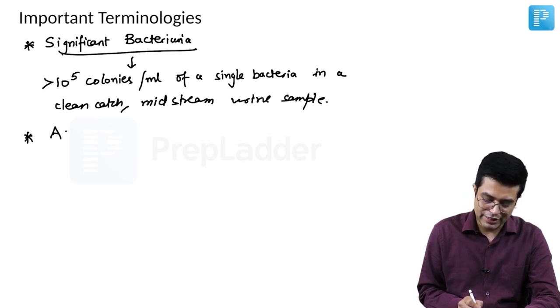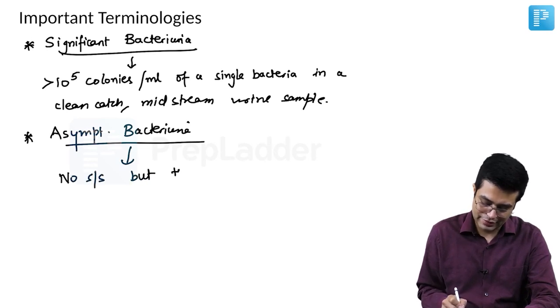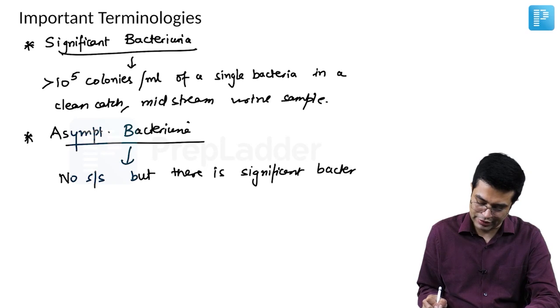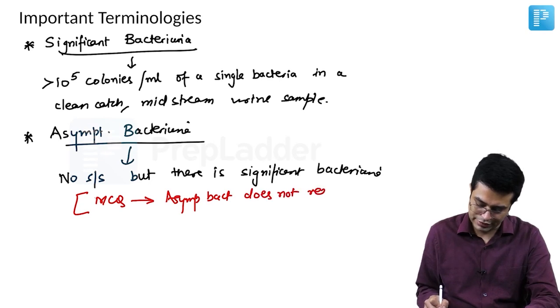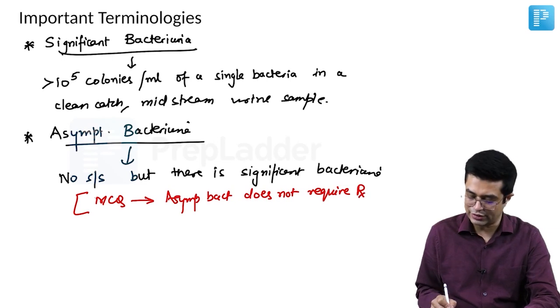What is asymptomatic bacteriuria? Asymptomatic bacteriuria, when there are no signs and symptoms, no clinical features, but there is significant bacteriuria, we call it as asymptomatic bacteriuria. Please remember, there is a clinical MCQ on this.